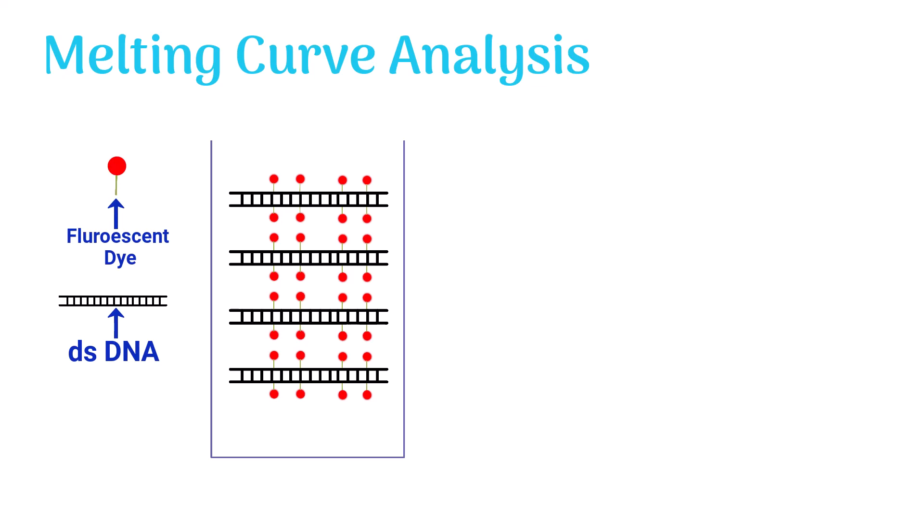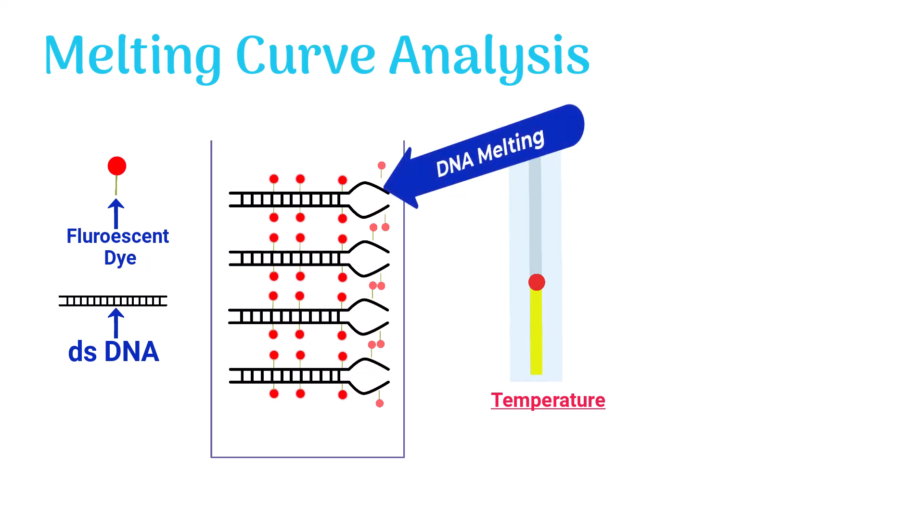In the next step, the temperature is intentionally raised so that the double-stranded DNA can dissociate. When the temperature goes up, the DNA strands start separating. This phenomenon is known as melting of double-stranded DNA.